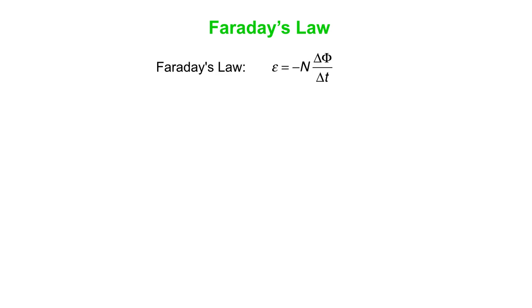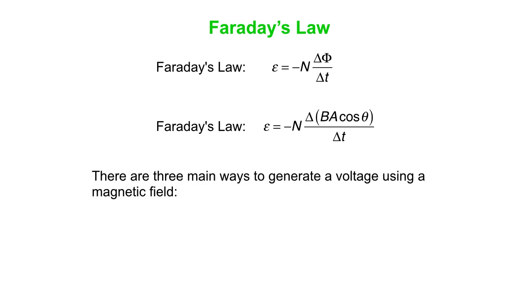So we can write this down. Faraday's Law, again, is EMF. The induced EMF is minus N delta flux over delta t. And flux, of course, is BA cosine theta. So we can say that a change in any one of those three variables gets us a voltage.